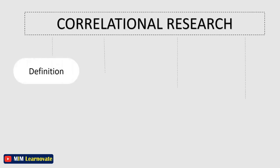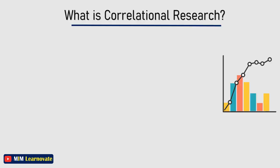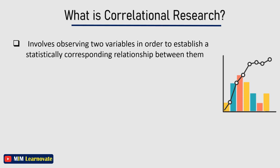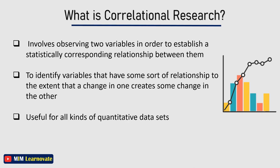Correlational Research is a type of research method that involves observing two variables in order to establish a statistically corresponding relationship between them. The aim of Correlational Research is to identify variables that have some sort of relationship, to the extent that a change in one creates some change in the other. Correlational Research Design is useful for all kinds of quantitative data sets.